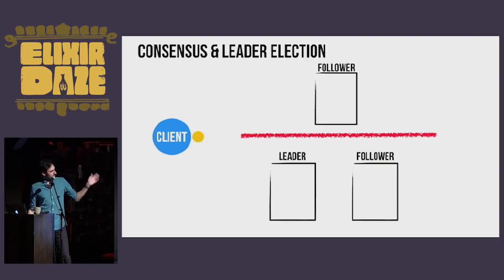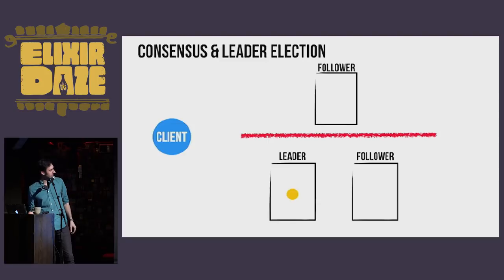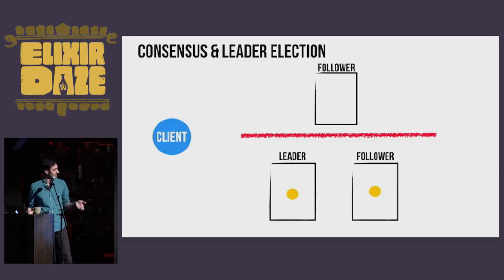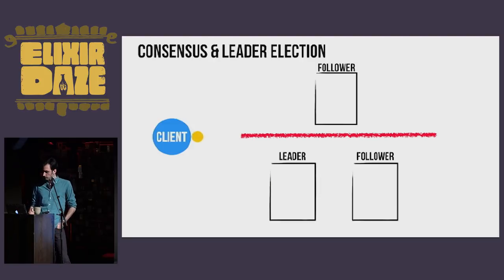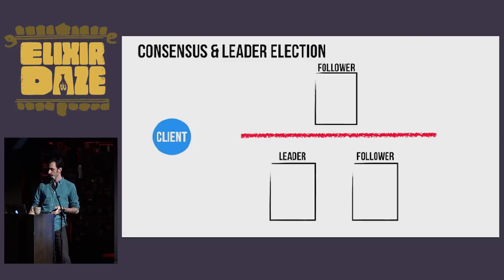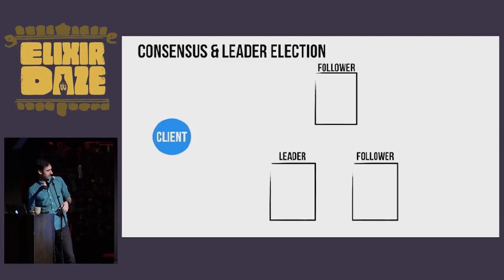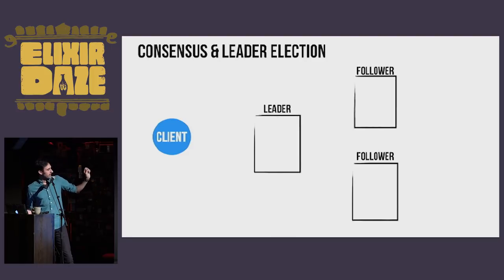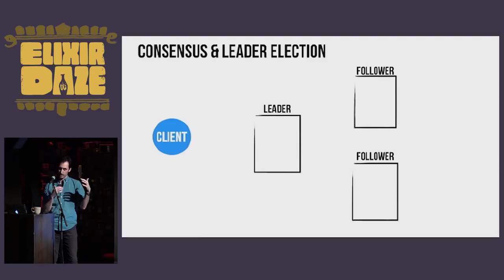The next client can say, who are the other nodes in the cluster? Let's send a message to them, figure out who the leader is. That leader will replicate to a majority, commit it, and send that back out to the client. Once the partition heals, the old leader just falls back in line and the new leader catches it up on any log messages it's missed, bringing its log back up to date and rectifying any errors.